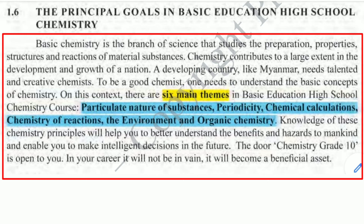On this context, there are six main themes in the Basic Education High School Chemistry course: particular nature of substances, periodicity, chemical calculation, chemistry of reaction, the environment, and organic chemistry.